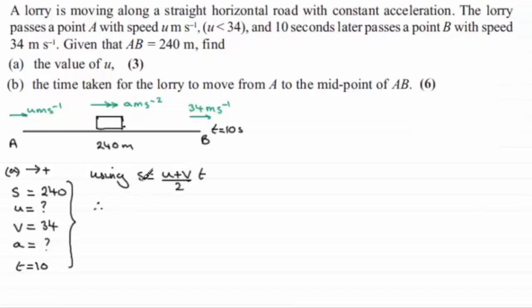So if we substitute our values in, we therefore have for S 240 then, equals U, which we're trying to find, plus V, which is 34, divide that by 2, and multiply it by the time of 10 seconds. And I can see that I could cancel the 2 into the 10, it goes 5 times. And that means then that therefore we've got 240, and if I expand the bracket we've got U times 5, which is 5U, and 34 times 5 is 170.